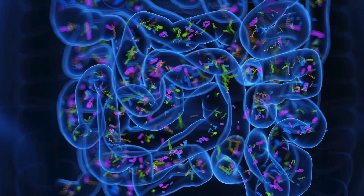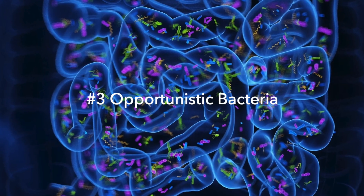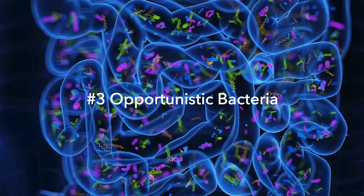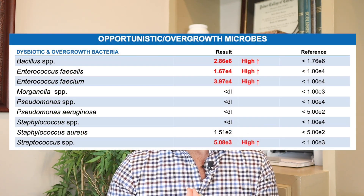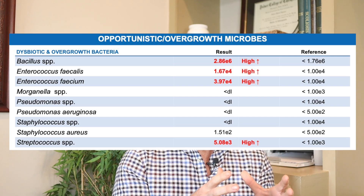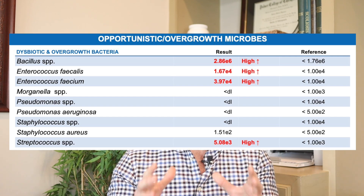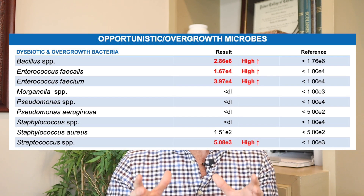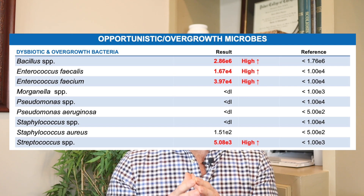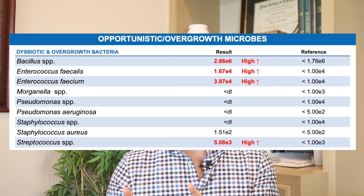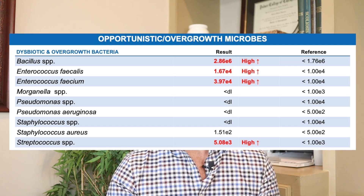Opportunistic bacteria are often found in the gut microbiome, but at such low levels that they don't usually cause a problem. However, under the right circumstances, when the right opportunity presents itself, these opportunistic bacteria can really wreak havoc on our health.